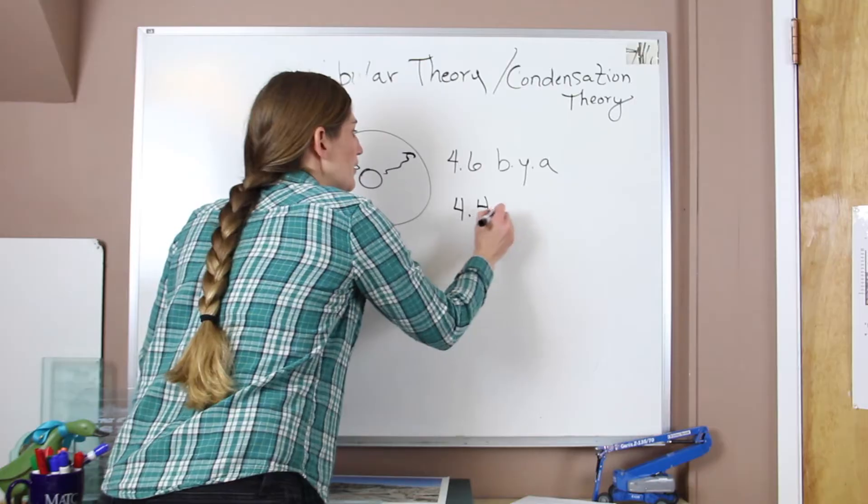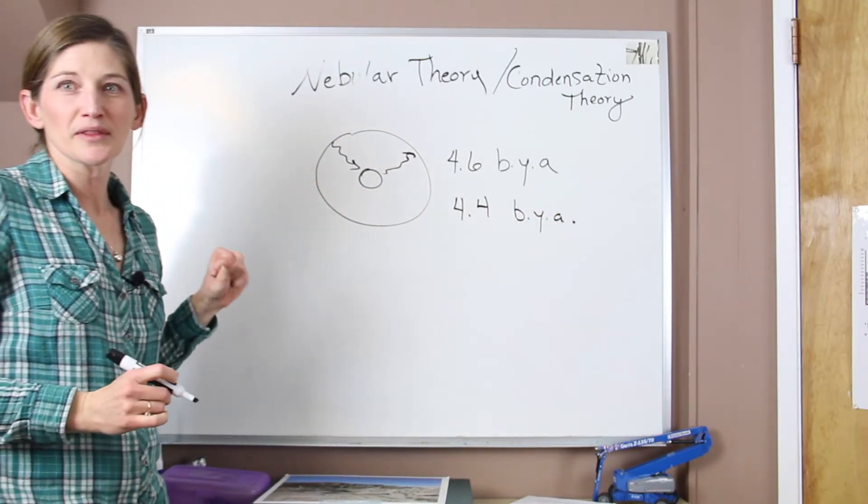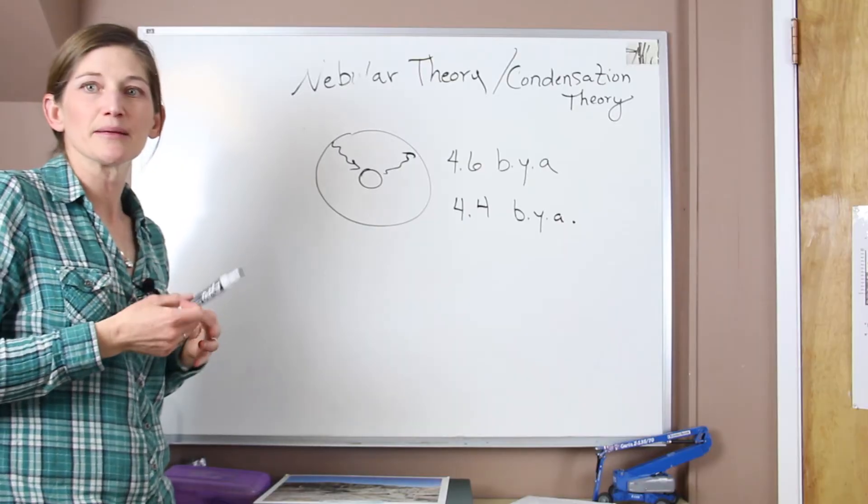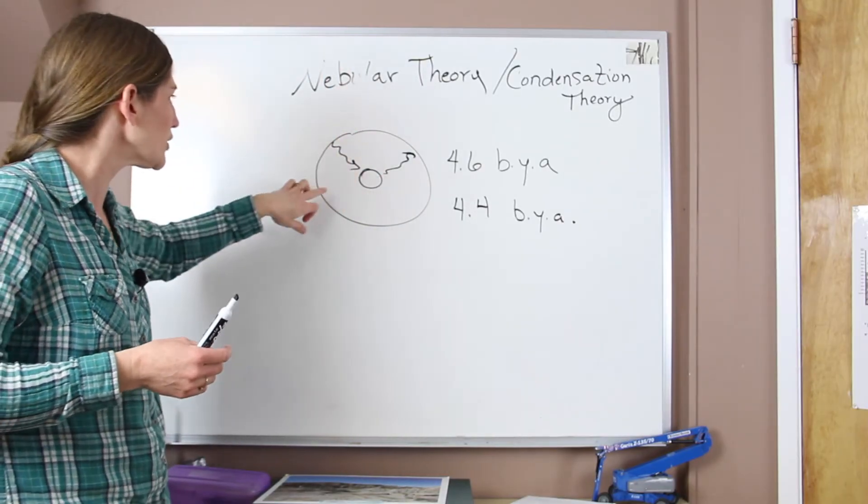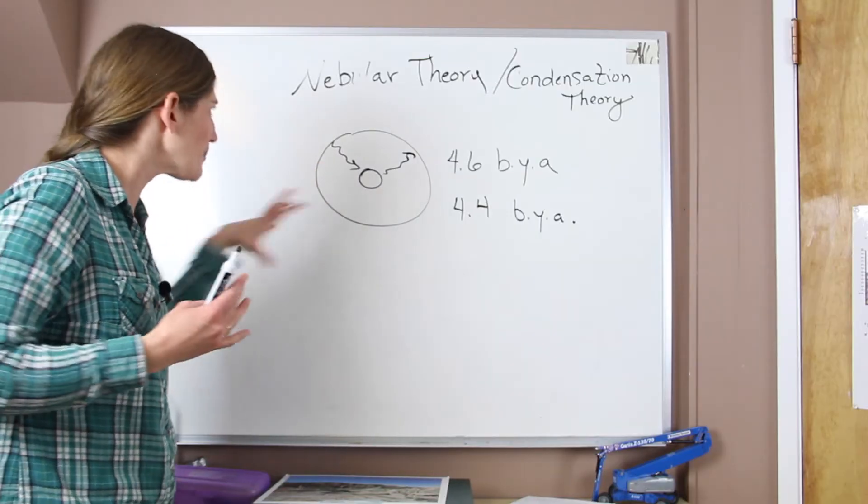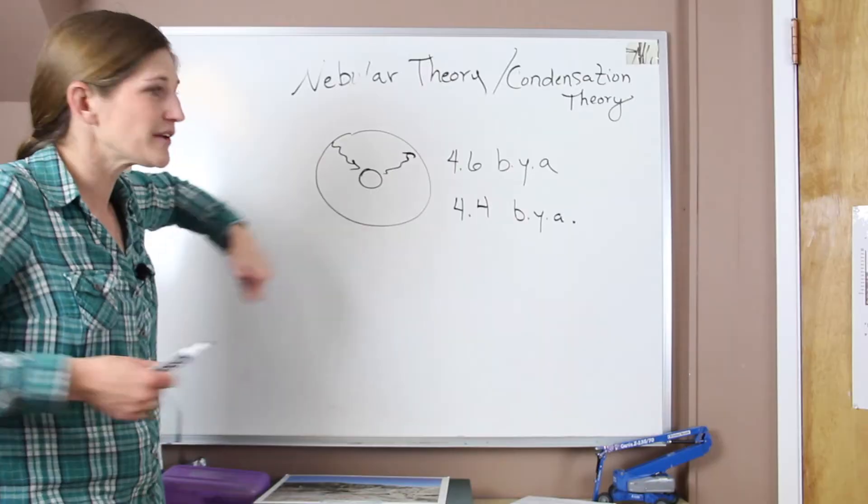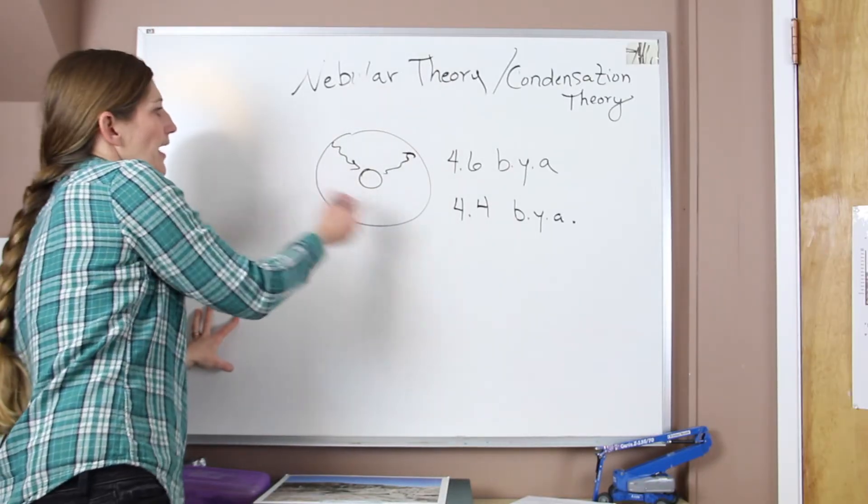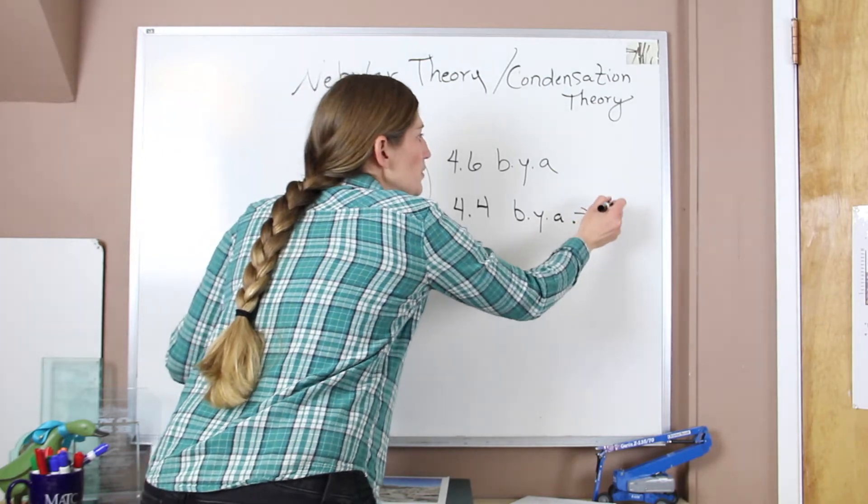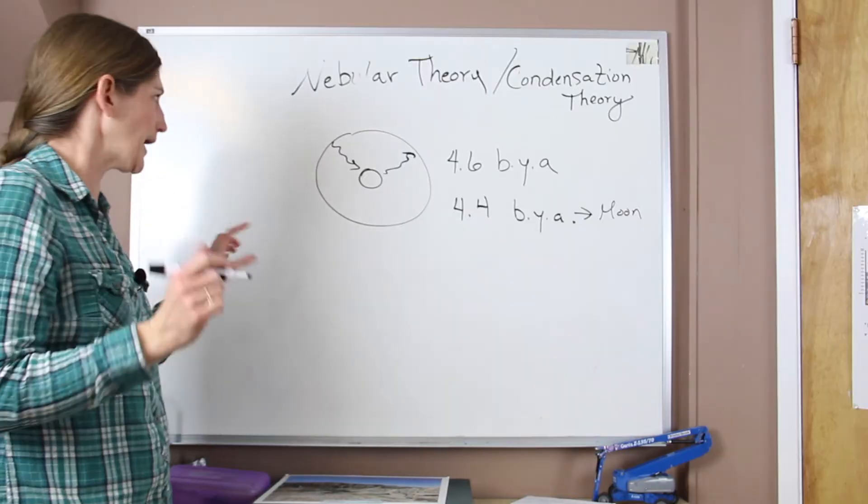About 4.4 billion years ago, another body collided with the earth, estimated to be about the size of Mars, struck this hot early earth. Some of that material was incorporated into our earth, and some of it was ejected back out into space. And that's when the moon came about. So that's the idea for where our moon came from.